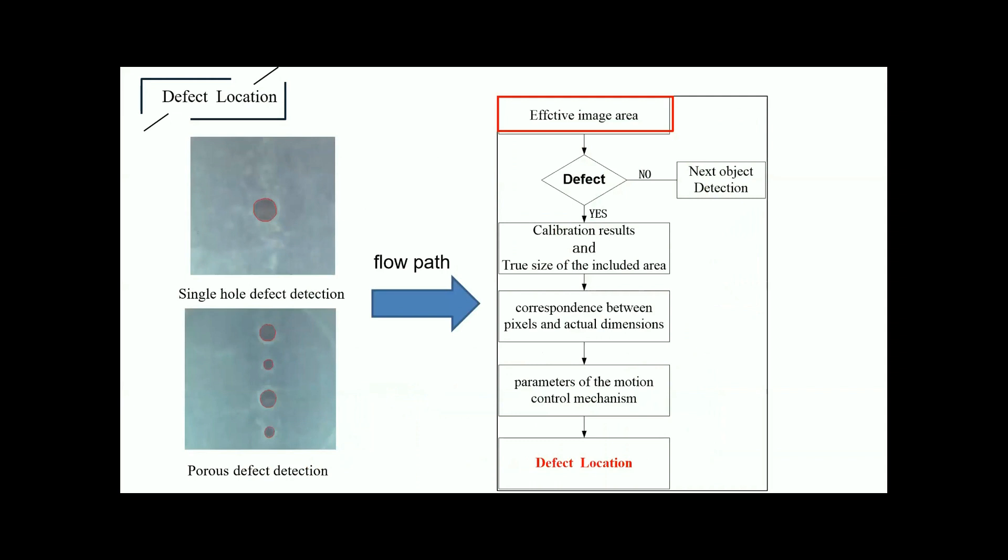After obtaining a valid image area, we will determine if there are any defects. And if so, we will use the calibration result and establish correspondence between pictures and actual dimensions, and combine with the motion parameters of the control mechanism. Then finally obtain the position of the defect. The above is the complete testing process.